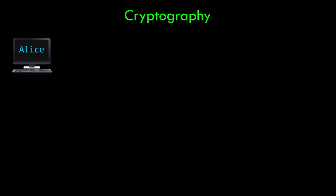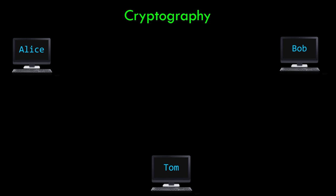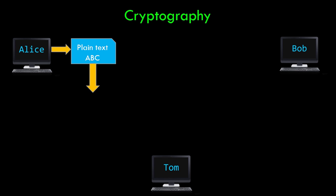Now that we've understood the principles of network security, let's have a look at the concept of cryptography. Before the theoretical definition, here's a simple scenario with our characters Alice, Bob, and Tom. Alice and Bob want to communicate, and this time they are smart enough to know that a third person could be listening over the network. Alice wants to send a confidential message — say ABC. She replaces each alphabet with the character two places ahead: A is replaced with C, B with D, and C with E.